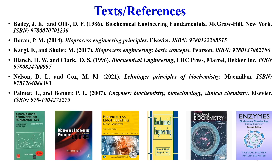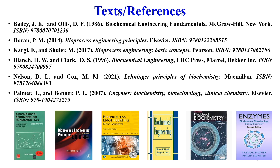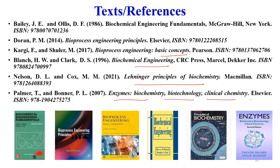The texts and references for this course include: Bailey and Ollis' Biochemical Engineering Fundamentals, Doran's Bioprocess Engineering Principles, Shuler and Kargi's Bioprocess Engineering Basic Concepts, Blanch and Clark's Biochemical Engineering, Lehninger's Principles of Biochemistry, Palmer's Enzyme Biochemistry, and Biotechnology and Clinical Chemistry. These are the main texts and references which will be followed in this course. Thank you.